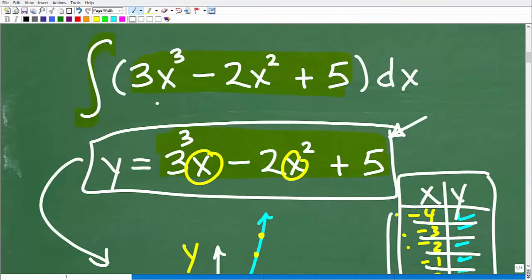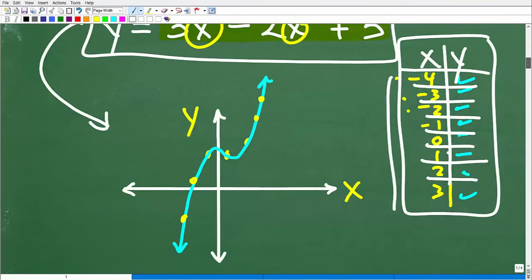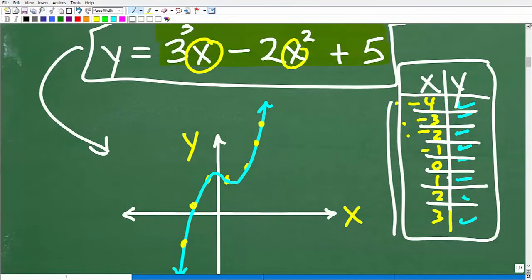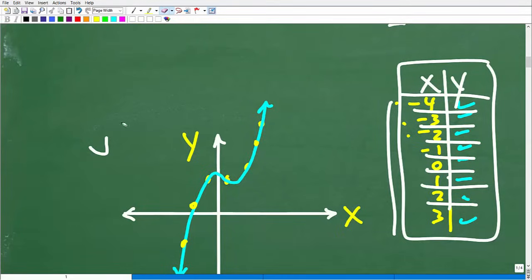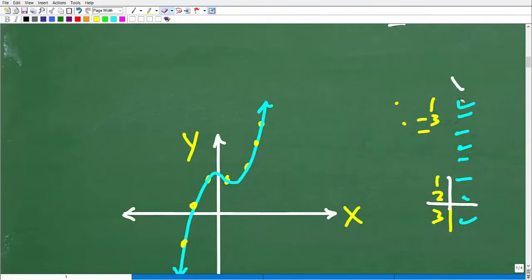You can always graph anything in this manner, or you could plug this into your graphing calculator. But the main idea here is that this thing right here, to the right of this integral statement, has a respective graph to it and it looks like this.